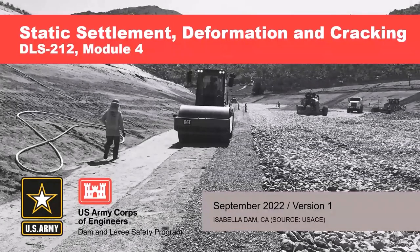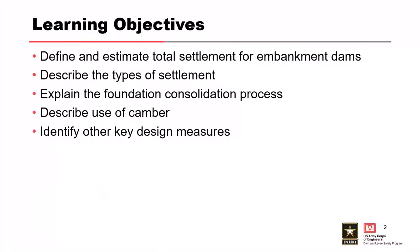We'll go ahead and get started with module four. This module covers static settlement, deformation, and cracking. The objectives include being able to define and estimate total settlement for embankment dams, look at different types of settlement, go through the foundation consolidation process, and describe how to define camber — where you overbuild the embankment by a few feet so that when it settles, you maintain your dam crest elevation.